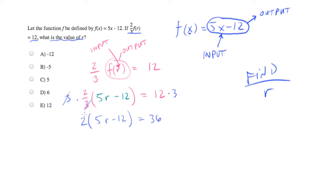Let's distribute the two. So we end up with 10r minus 24 equals 36. Add 24 to both sides.